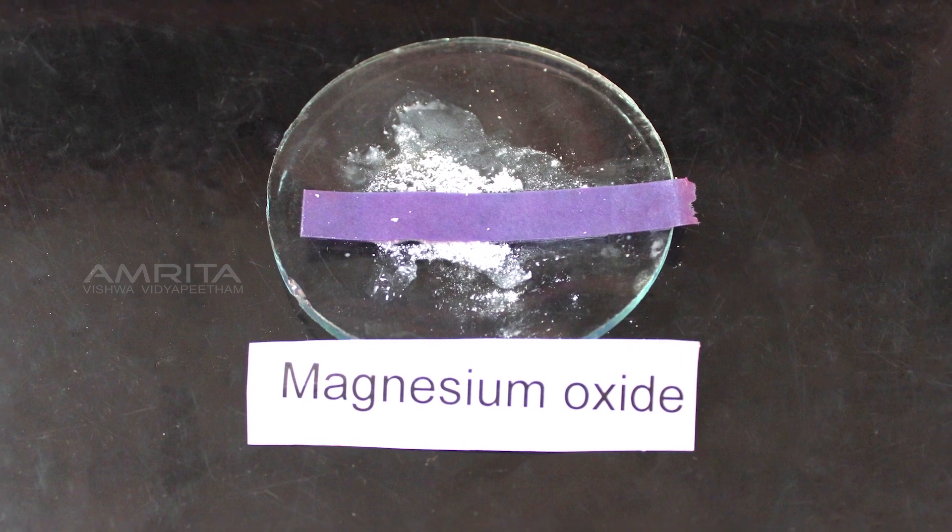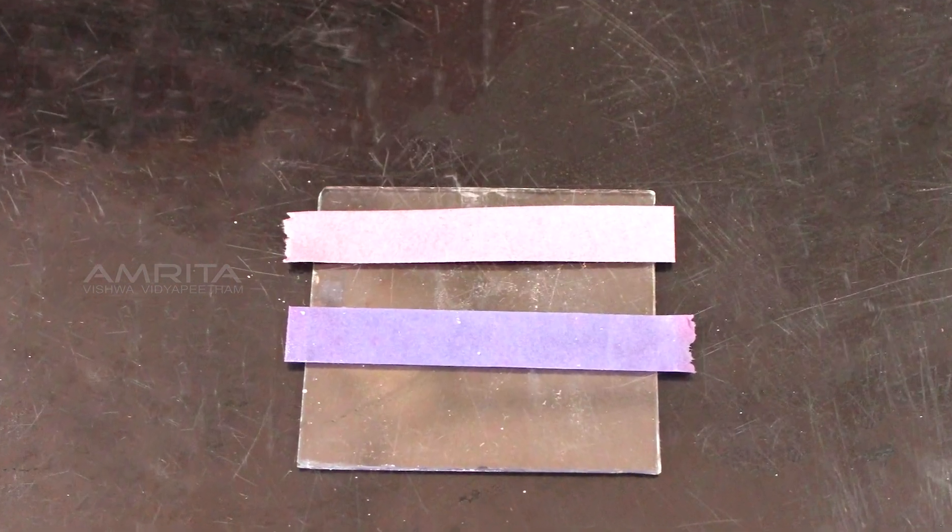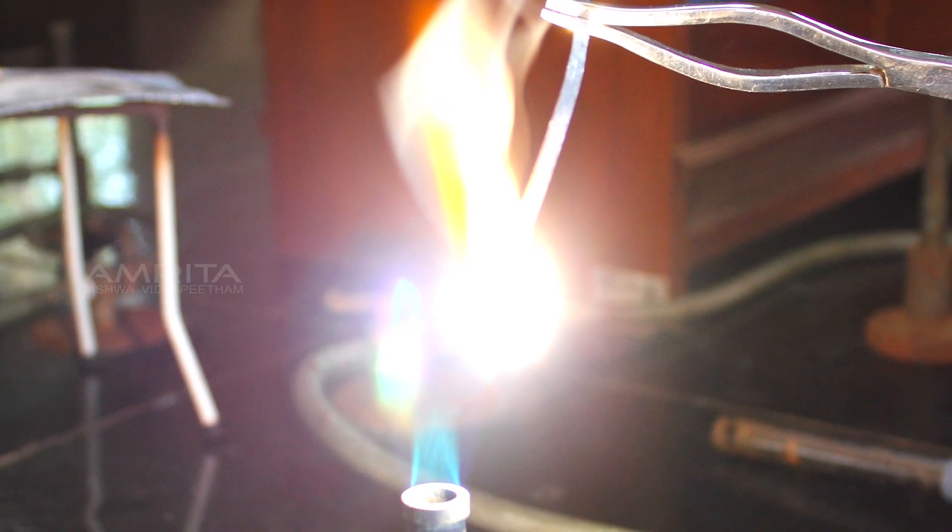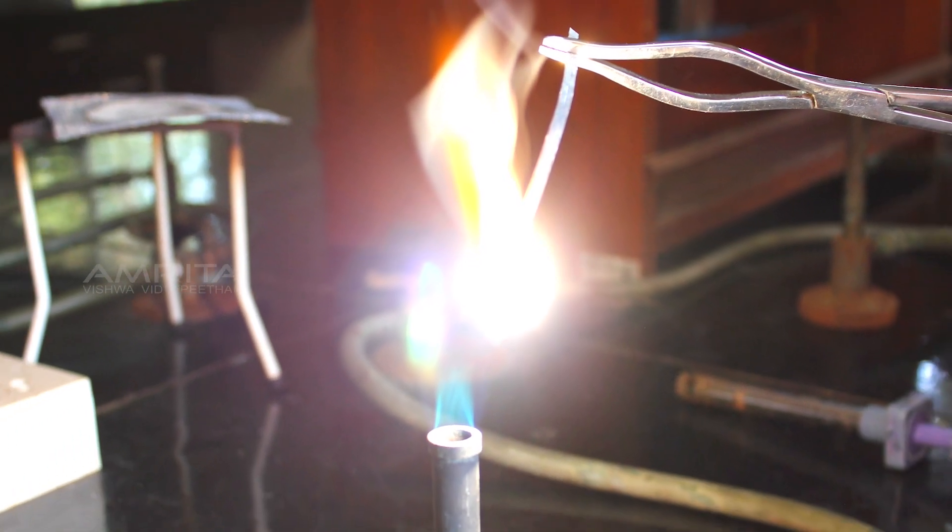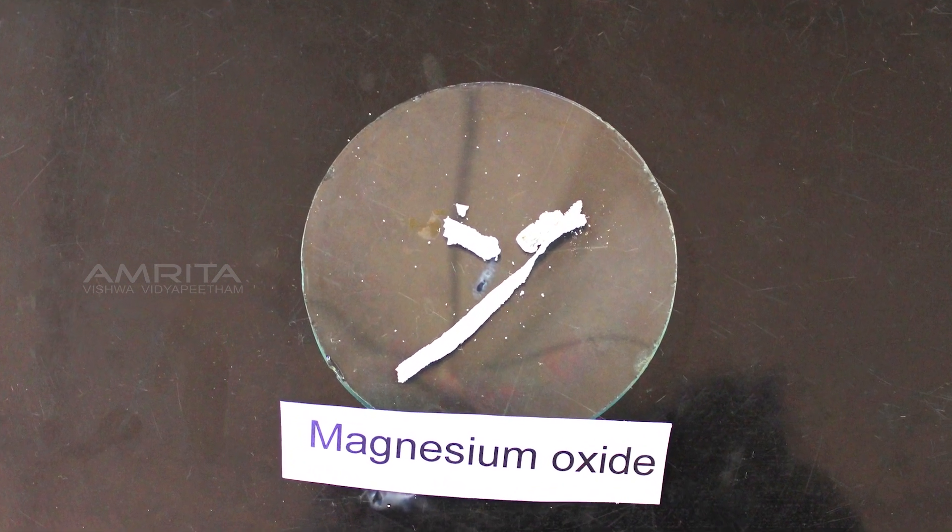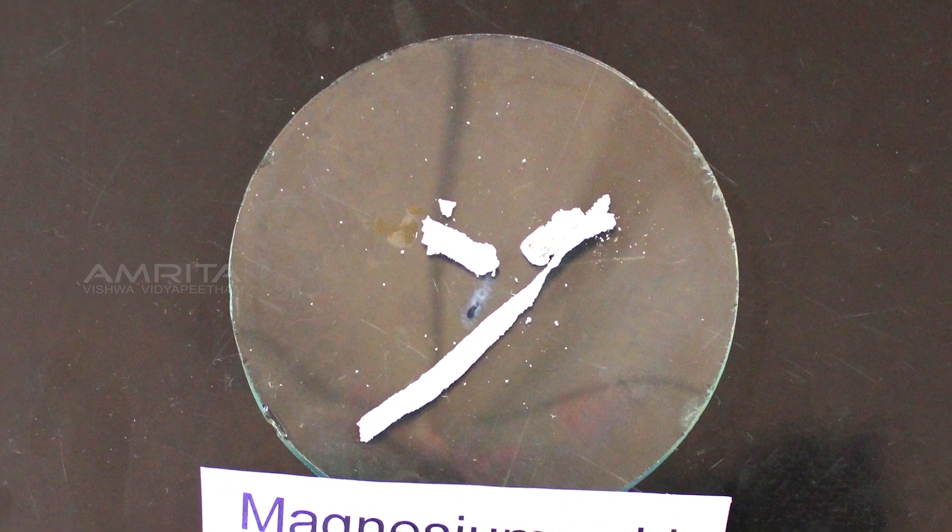This reaction shows a chemical change as the reactants oxygen and magnesium combine together to form a new substance, that is magnesium oxide. The formed magnesium oxide has a different chemical composition which is different from both magnesium and oxygen.